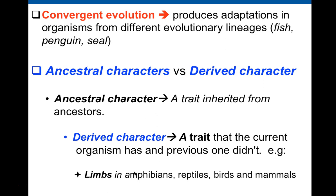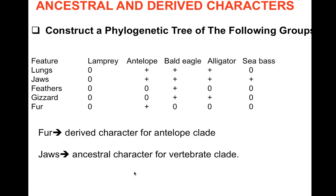Limbs, when dealing with tetrapods, are a derived character, not an ancestral one. If you're dealing with another structure that even fish possess — like lungs in some cases — that would be considered more ancestral. Let's look at a specific example to work through this better.